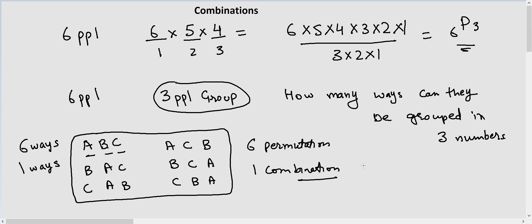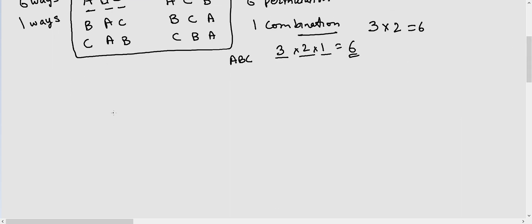So how do you calculate the number of ways? If we have three people sitting on three different chairs, we have three, two, and one possibilities, and multiplying them gives us six — that is 3! = 6. So all you have to do is take the total number of permutations, which is 6P3, and divide it by 3 factorial.